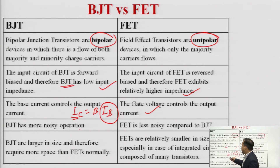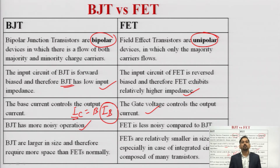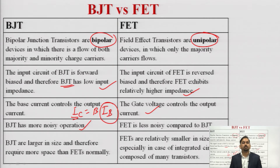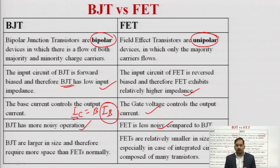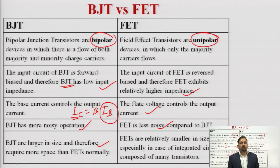BJT are more noisy devices because of the minority charge carriers present in the device. During BJT operation there are minority charge carriers that are very temperature dependent — for every 10 degree rise in temperature, the leakage current doubles. When there is a leakage current, that device will be more noisy. In FETs there is no minority carrier current, so FETs are less noisy in comparison with bipolar junction transistors. Also BJT is relatively large in size compared to FET, which is why FETs are used in manufacturing integrated circuits.